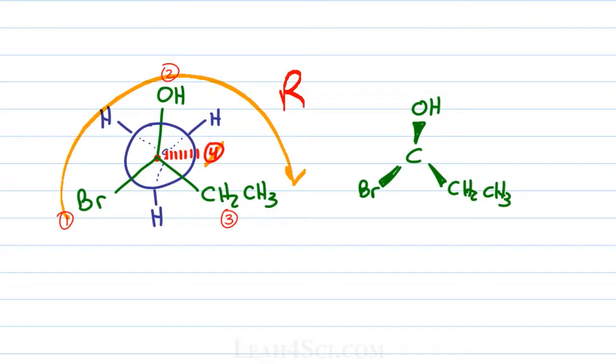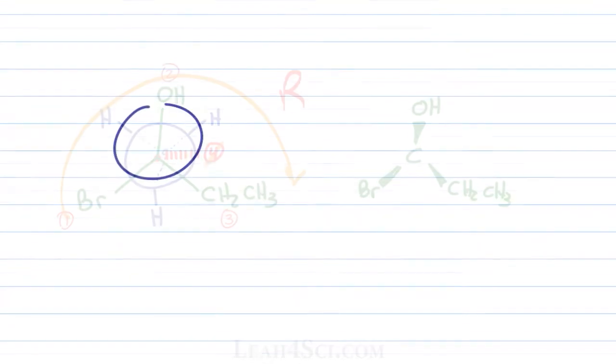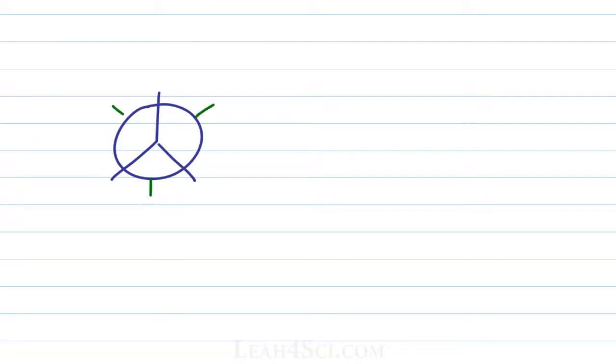This was a simple one to show you what we're looking at, but now let's see what happens if number 4 is not in the back. For this Newman projection, we'll have two hydrogens and a CH3 on the rear carbon. On the forward carbon, we'll have a CH3, a chlorine, and an NH2.